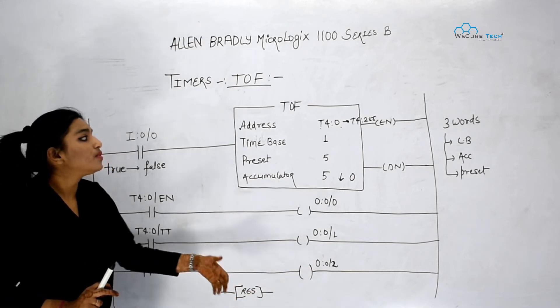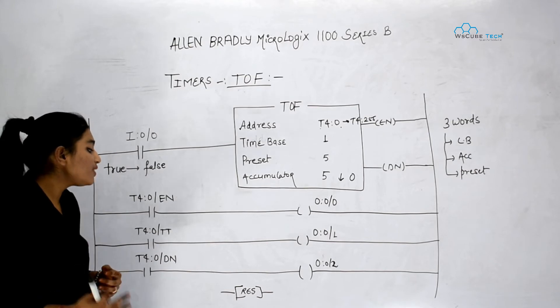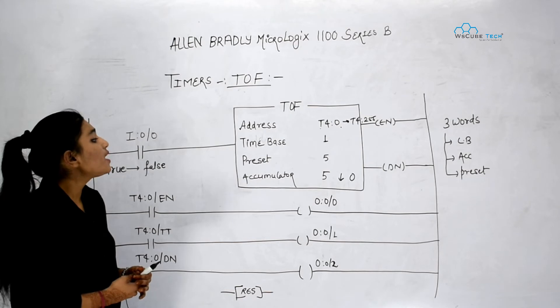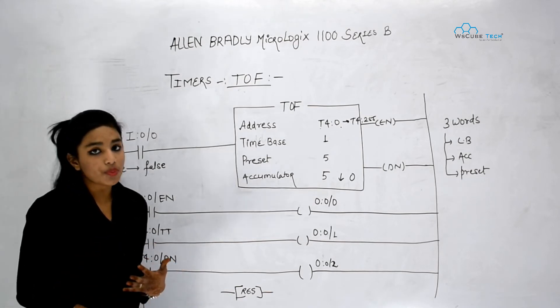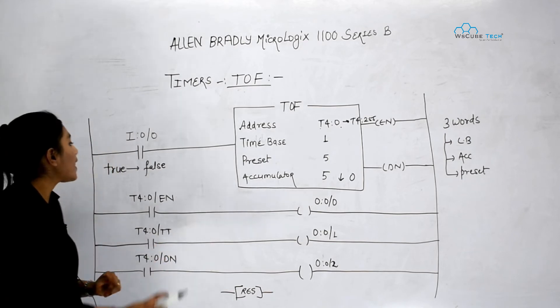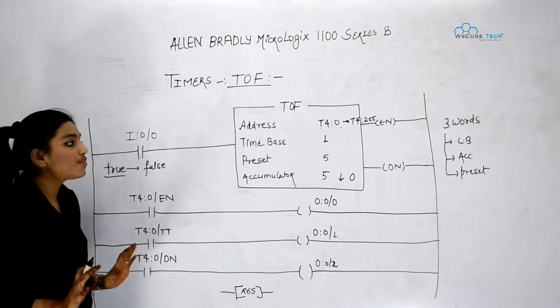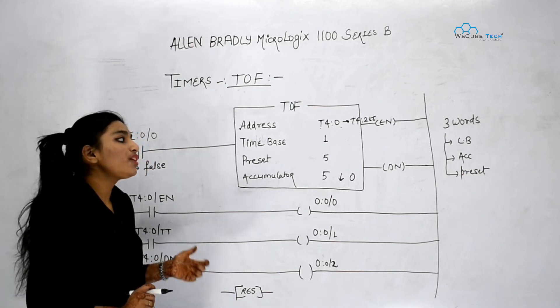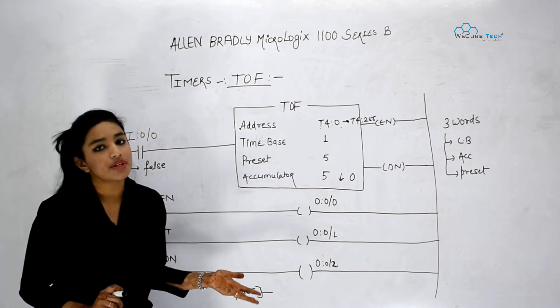So this is how working of TOF. Next one more thing that we can't use reset instruction to reset our TOF. It means when I want that our accumulator again becomes equal to preset, that time what I can do I can make my rung true. That's it. So we can't use reset in that. And one more thing that in PLC TOF takes 3 words memory. One is for control bit, one is for accumulator and one is for preset.